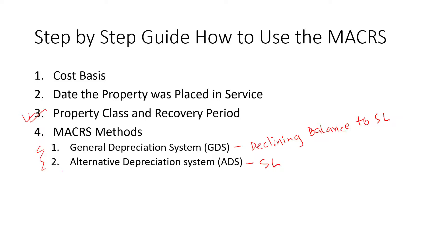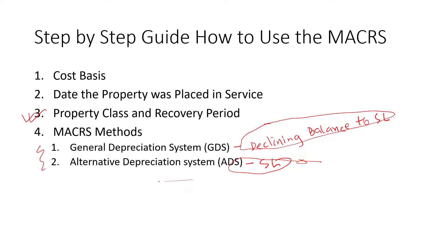IRS doesn't care which one you use. The declining balance method, as explained in the earlier video, has a faster recovery, whereas the straight-line method has a slower recovery. So whatever gives you the most benefit, use that — it's whatever gives you the maximum benefit.